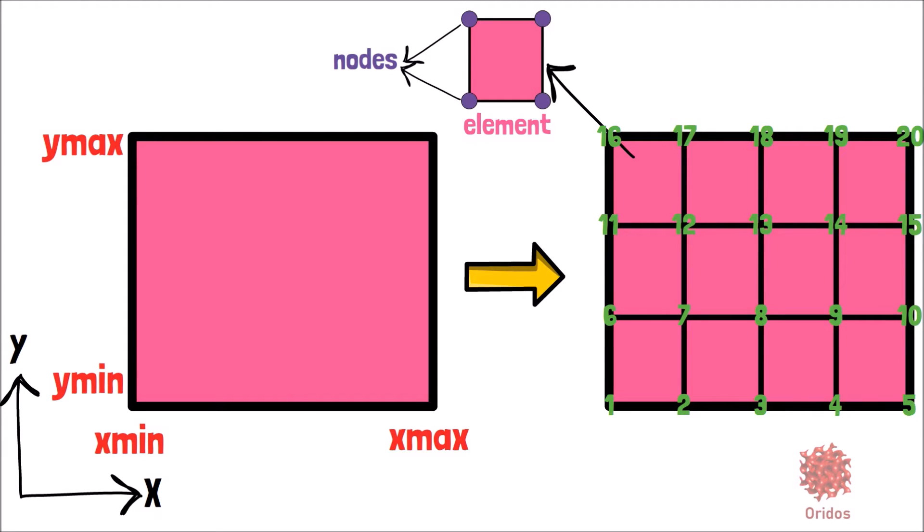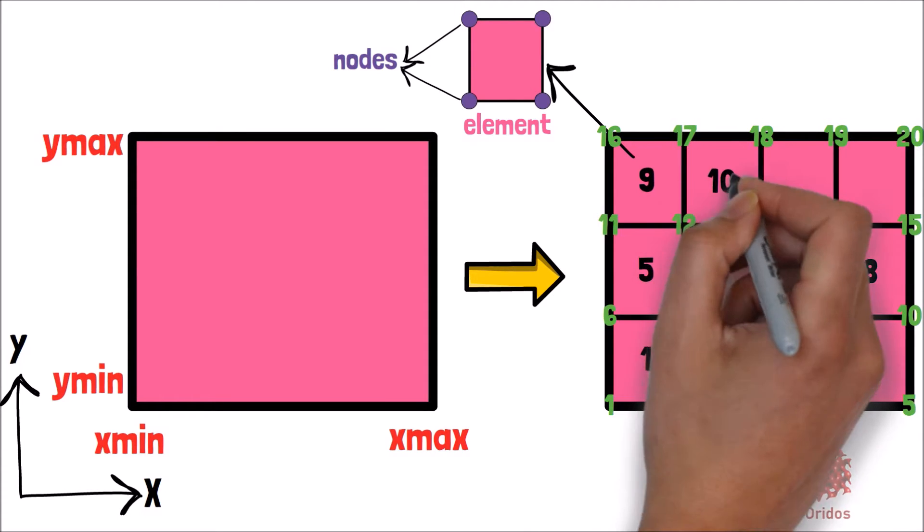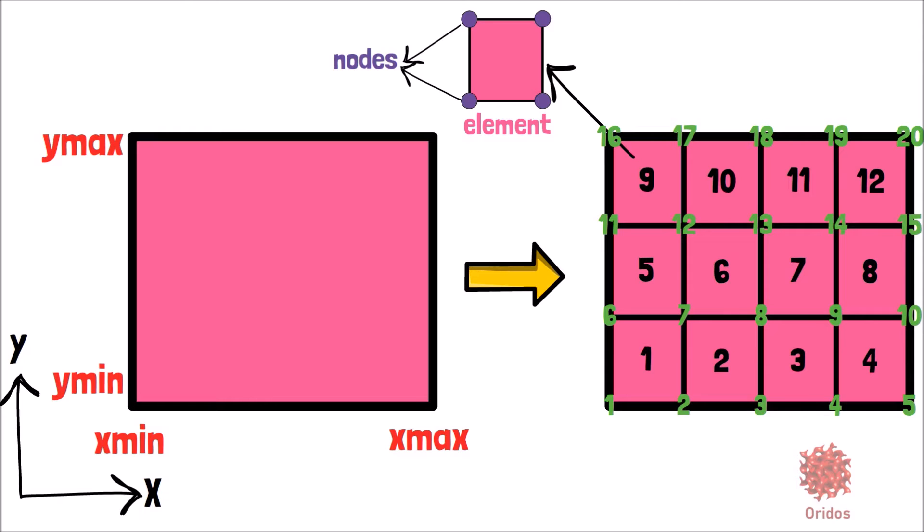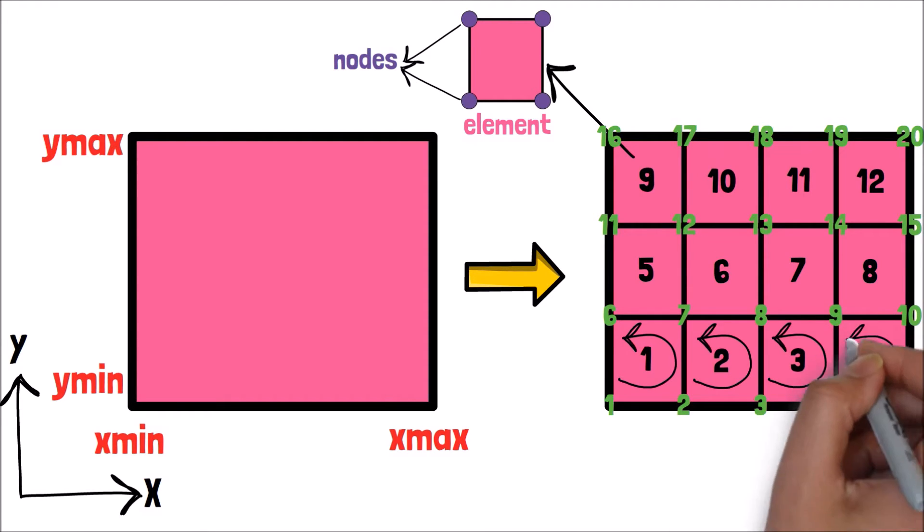For element numbering, the rule is from left to right and from bottom to top. To generate the connectivity matrix, we need to know each element talks to which nodes. Therefore, as a rule, and for convenience, I will use the counterclockwise rule. For example, for element number 1, the connectivity will be 1, 2, 7, 6.